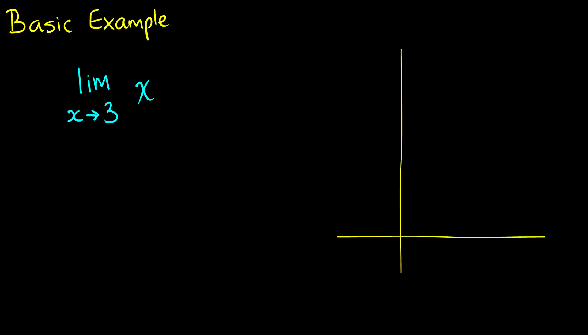Here's a basic example: the limit as x approaches 3 of x. Let's draw this. Here is the function f(x) = x — very boring. If we put in 1, the output is 1. If we put in 2, same thing. And if we have 3, it just outputs 3.